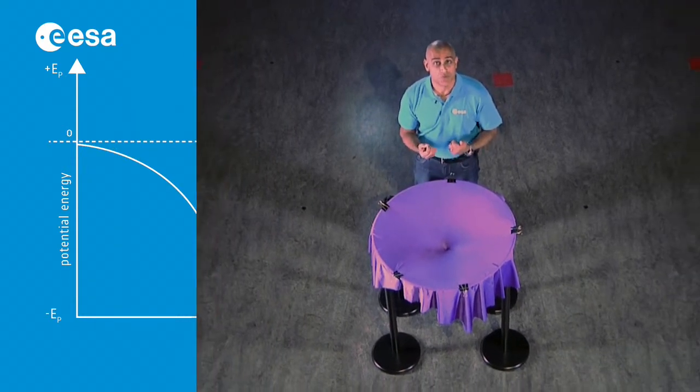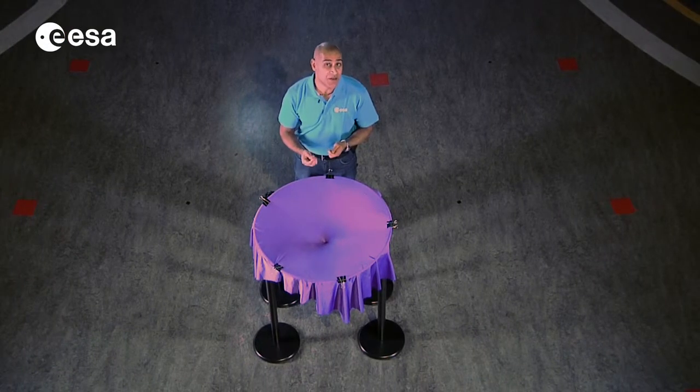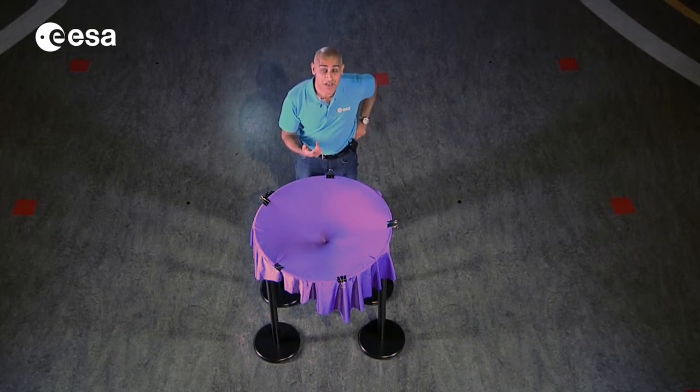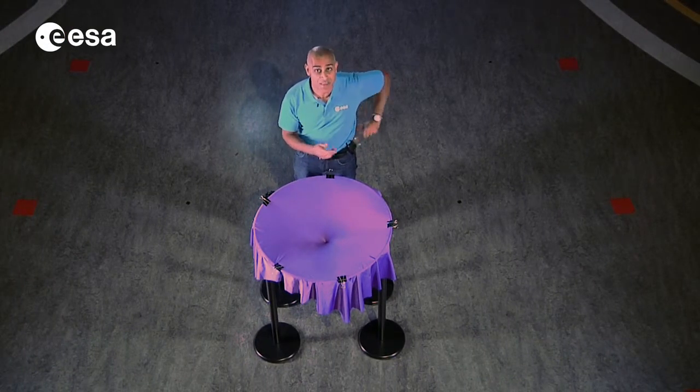Now very often we think that orbits are circular, but actually they're elliptical. And we can show that very easily with our marbles.